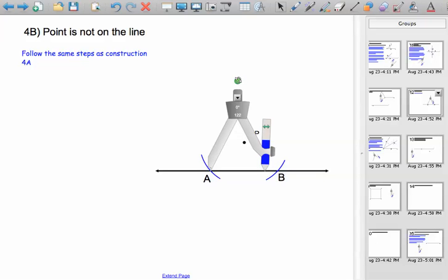Then from each endpoint, so from A, you're going to draw an arc up here and down here. And from B, you're going to use the same arc length to draw two arcs that intersect the two you just drew.